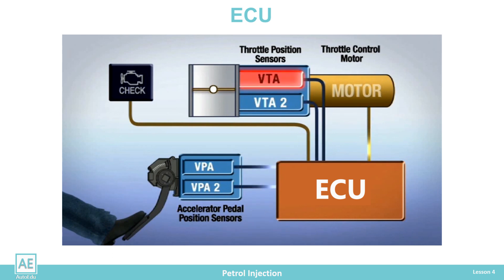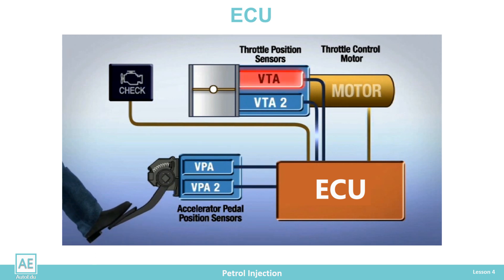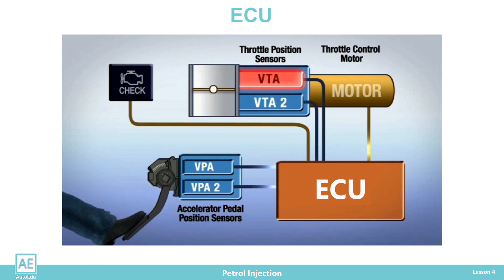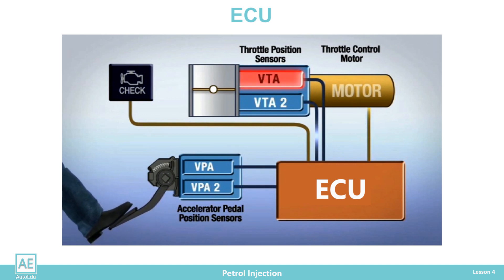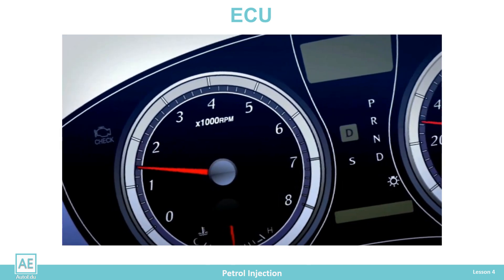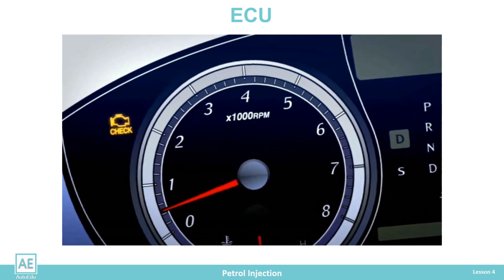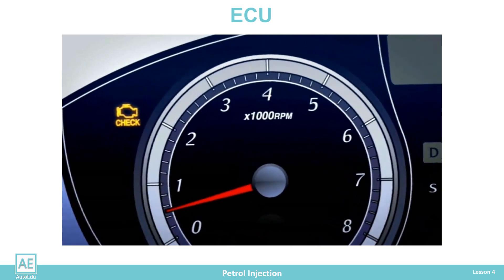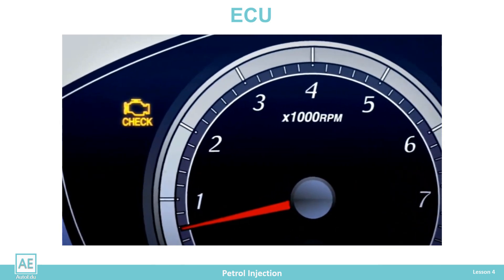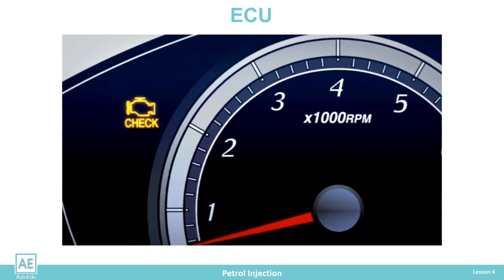In addition to internal control, the ECU constantly controls the operation of the electronic accelerator pedal and the throttle module. If a malfunction is detected that could affect the vehicle's safety, the engine stops, the fault code is stored, and the malfunction indicator lamp comes on.